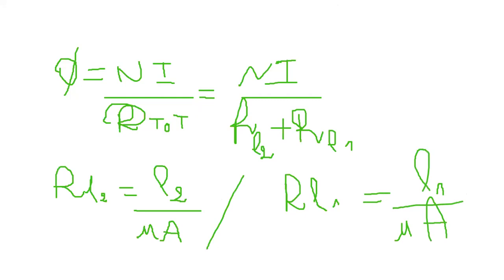How do we know whether reluctances are in series or in parallel? It depends on the shape of the core. Here they are in series. If there were a parallel branch, flux behaves the same way as current — those reluctances would be in parallel. Since we have two reluctances in series here, we simply add them.